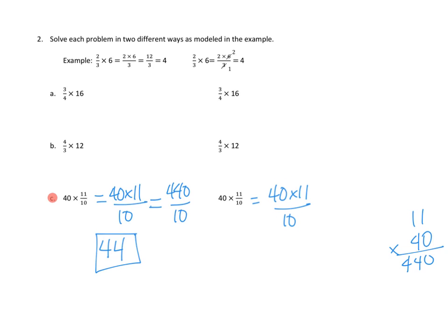So instead of 40, we will get 4, and in the denominator, we'll get 1. And now we have a much simpler problem, which is 4 times 11, that's 44, all over 1. So no denominator. And hey, there it is, 44.